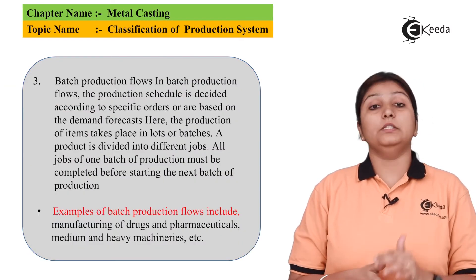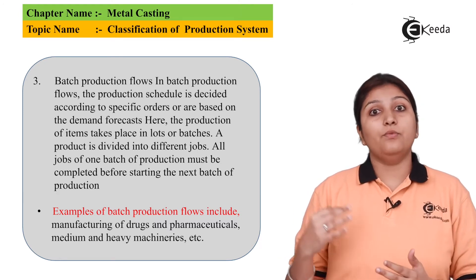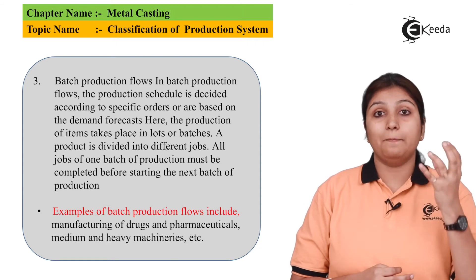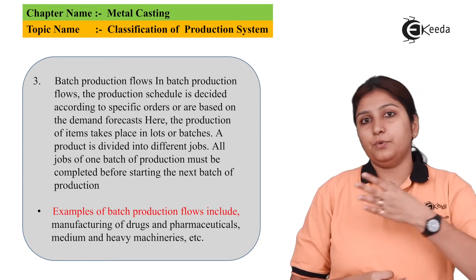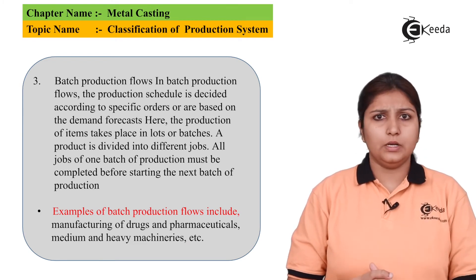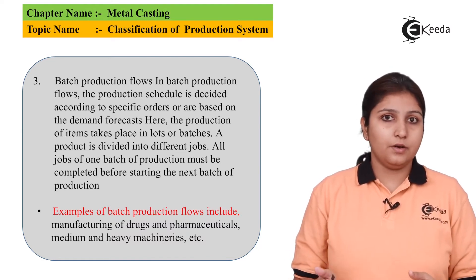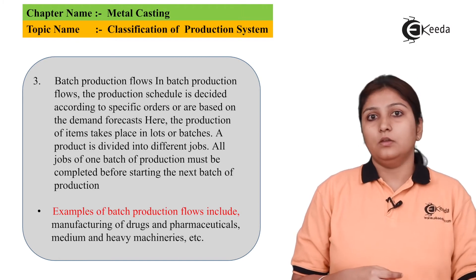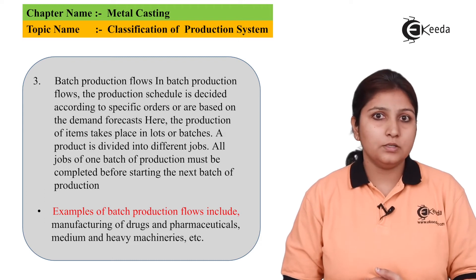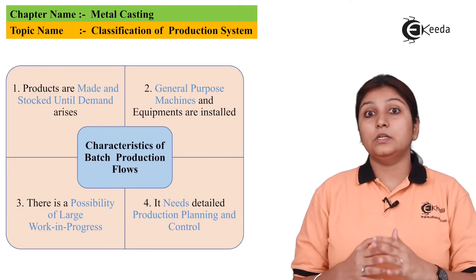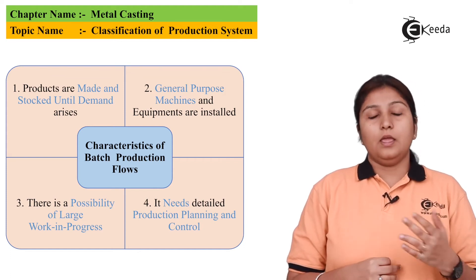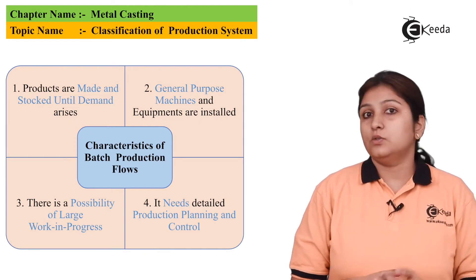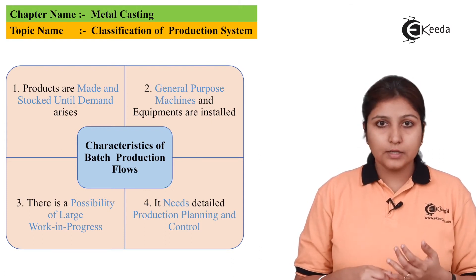The next production system is batch production. This is required when forecasting is done — for example, when any kind of medicine or precious job is required in small quantities. Examples include pharmaceutical industries and manufacturing of any drug or machinery. The difference between job and batch is that in batch, very small quantities are required for production. Salient features include: it needs very detailed planning and control, especially since the job can be very precious. It is only made when stock or demand arises; without that, batch production does not work. This completes the intermediate production system, which consists of project, job, and batch.